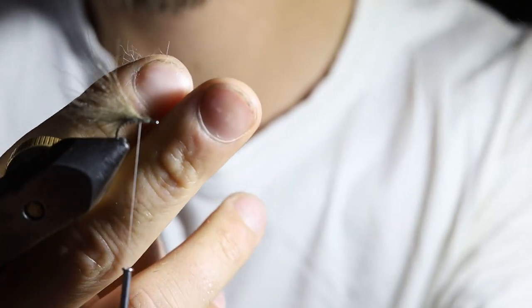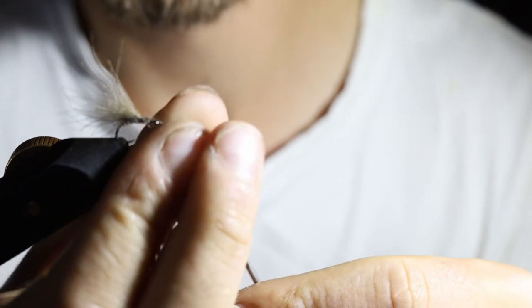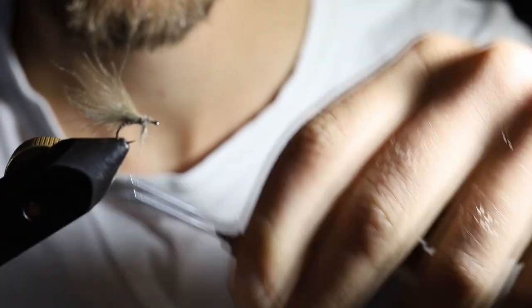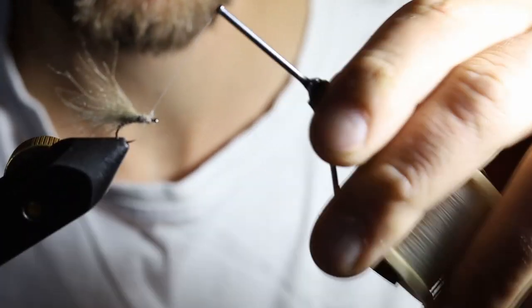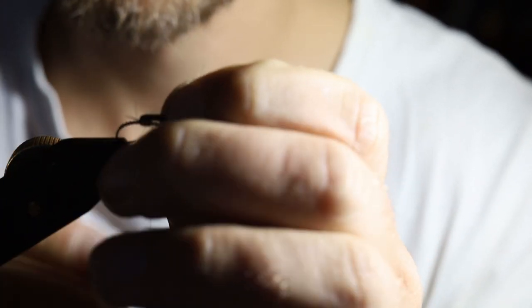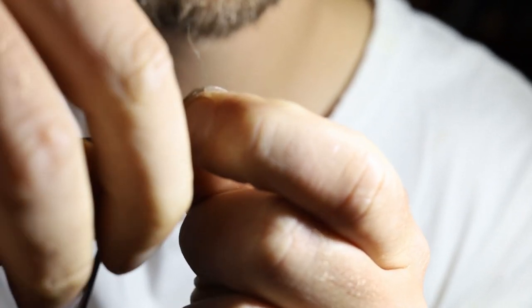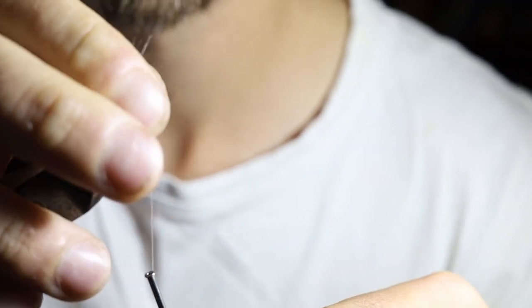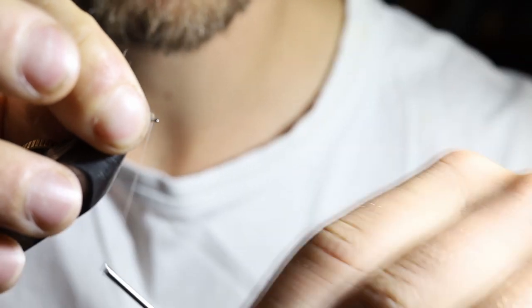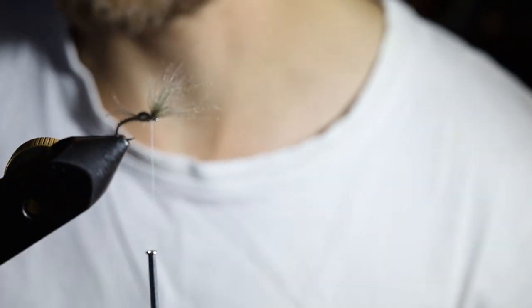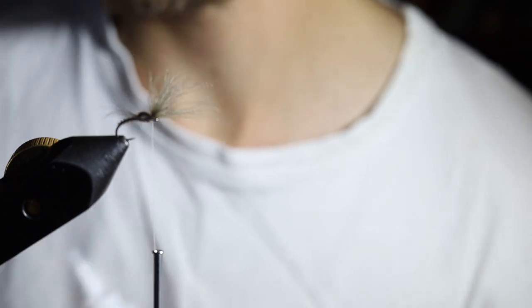And you're just going to do the same as earlier. Bit of dubbing. Grab these fibers as a bunch. Pull them over the thorax. Couple of turns of thread. Pull them back. Couple of turns of thread in front. And hey, sorted. Bit of super glue.